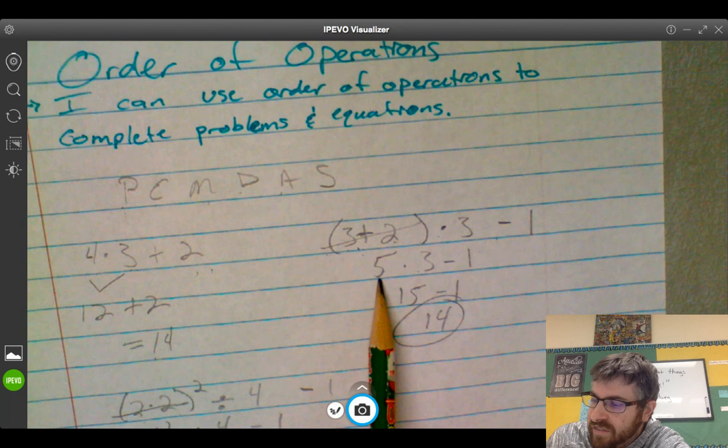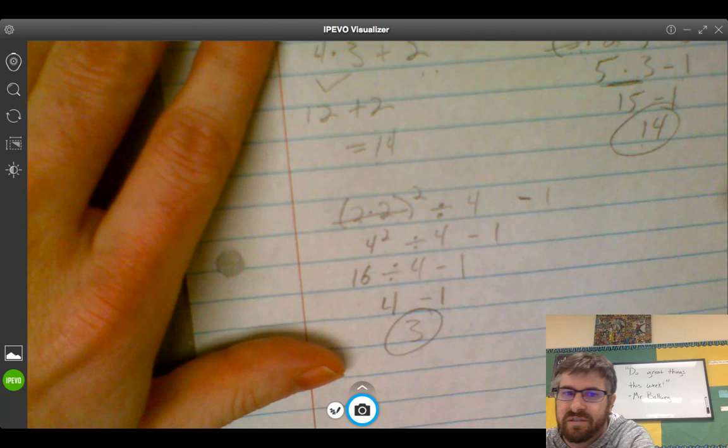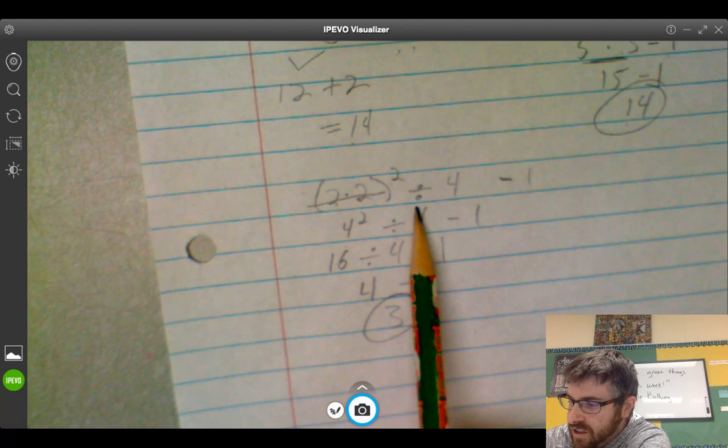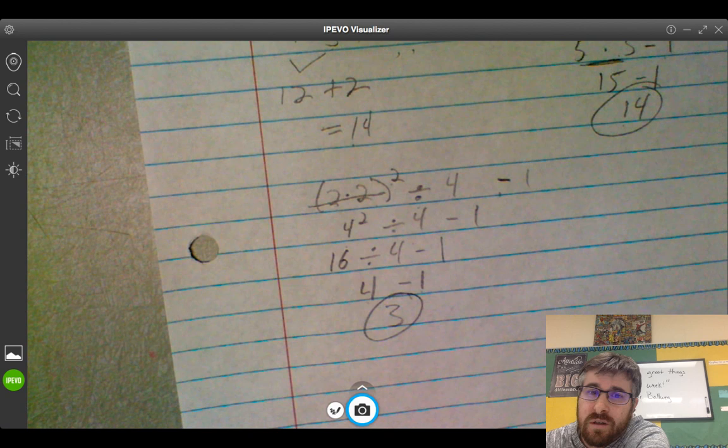Okay, one more problem. We got a bunch of everything here. You have parentheses, you have an exponent, you have division, you have subtraction. Doesn't matter if they're in this order or if they're in a different order. You still have to do it the same way.